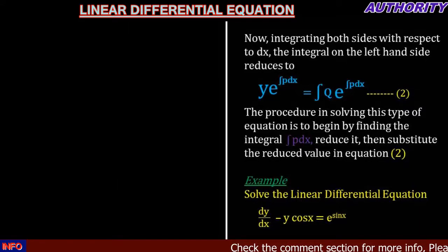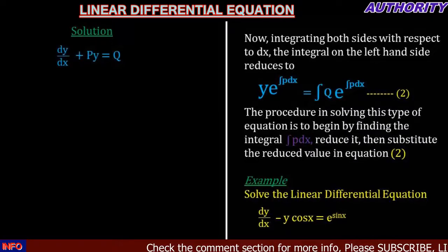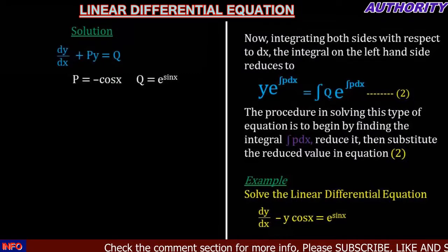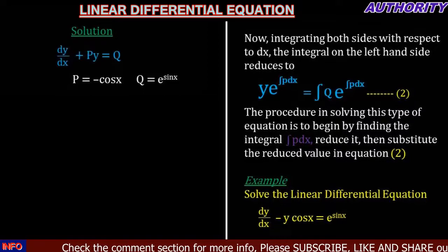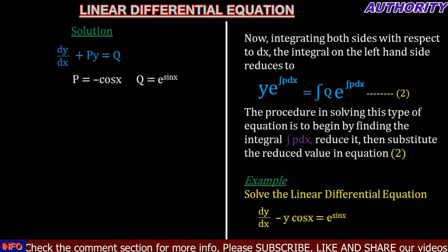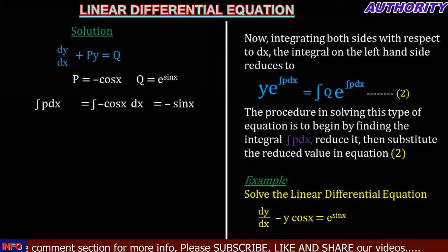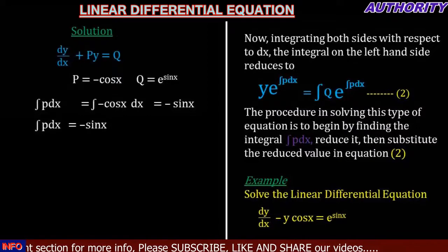We have dy/dx minus y cos x equals e raised to power sin x. Comparing this with dy/dx + Py = Q, we can see that P equals minus cos x, and Q equals e raised to power sin x. Now let's integrate P with respect to x: the integral of minus cos x gives us minus sin x.